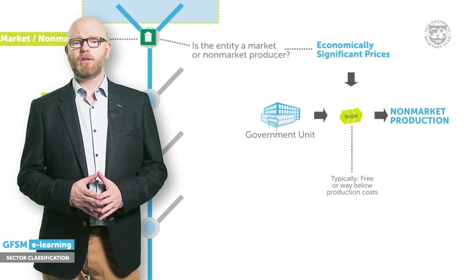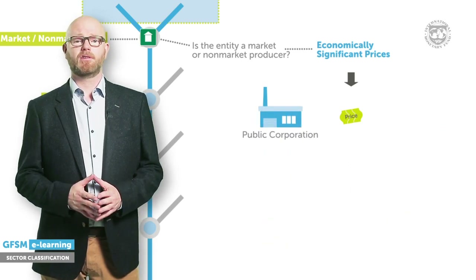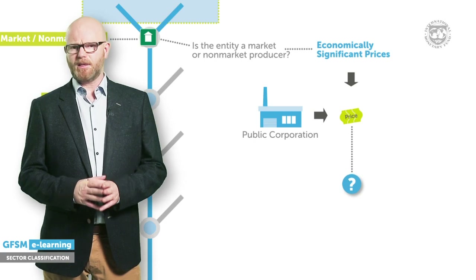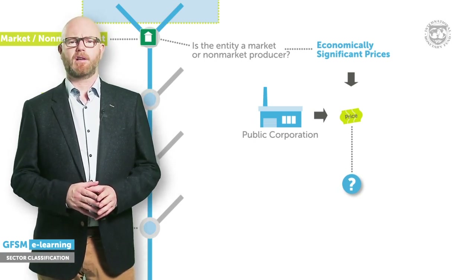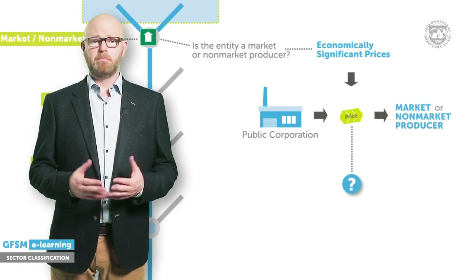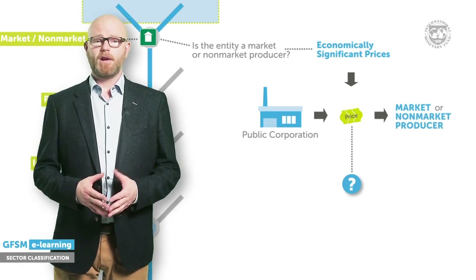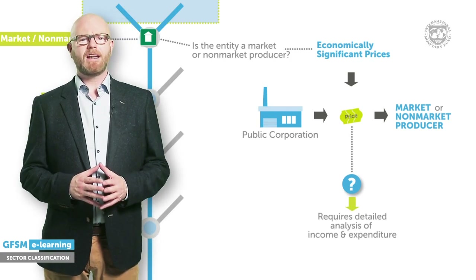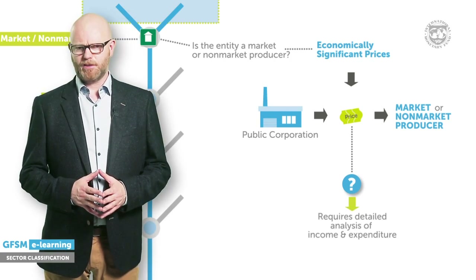Public corporations, however, usually sell goods and services to consumers, often in competition with privately owned firms, yet these companies often receive financial or other support from the government. Deciding whether a government-controlled airline, bus company, railway, or recreation centre is a market or non-market producer requires an analysis of their income and expenditure. GFSM also provides specific guidance for more complex cases such as public-private partnerships and national investment corporations.